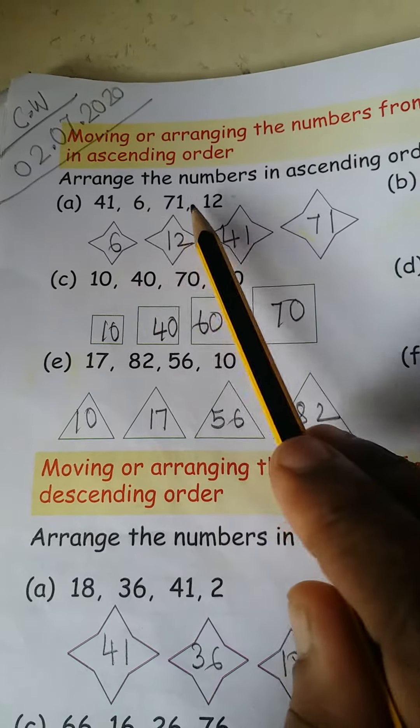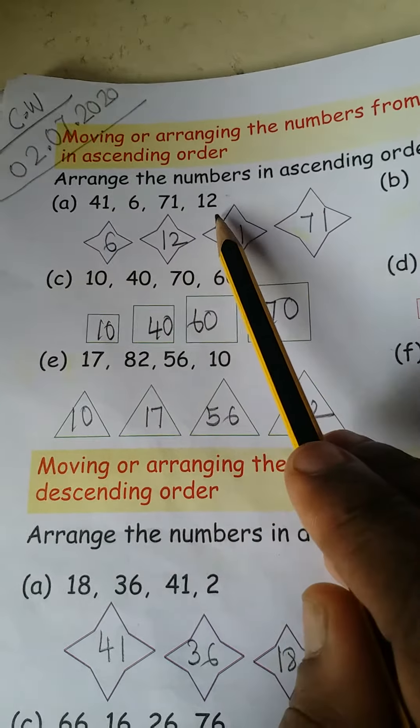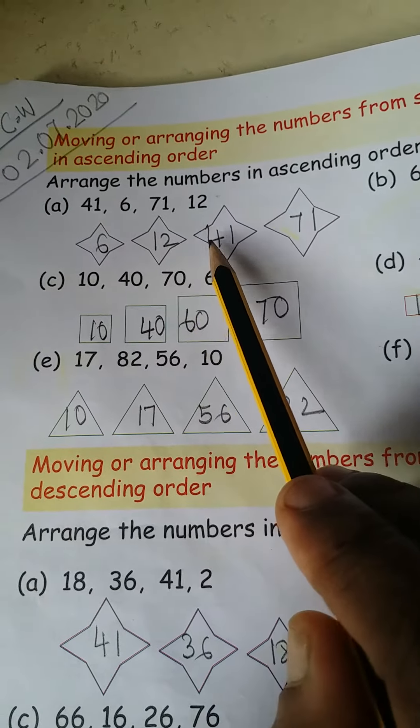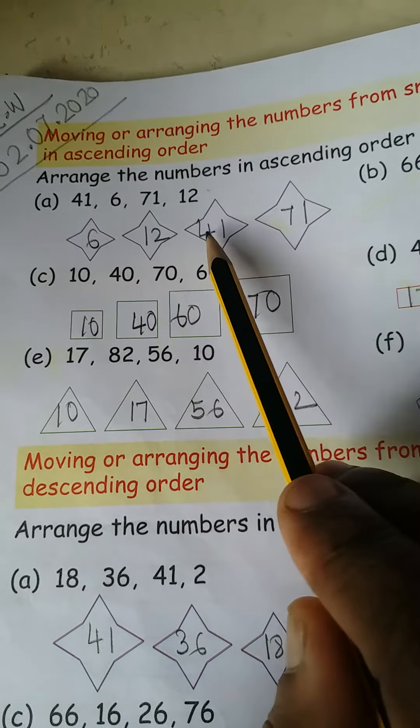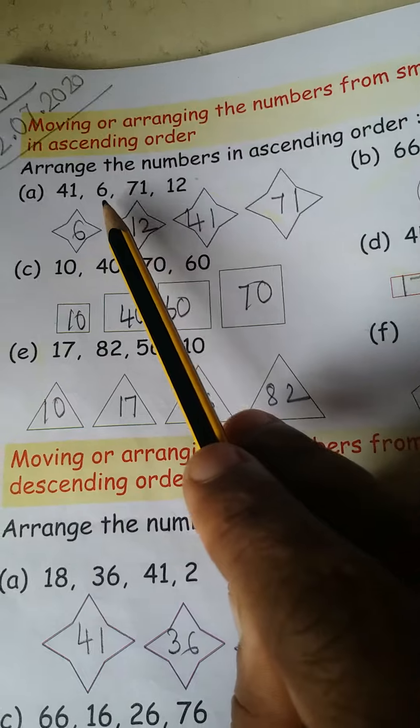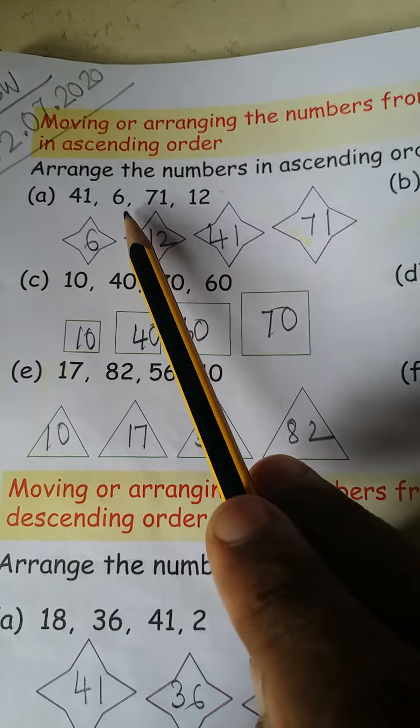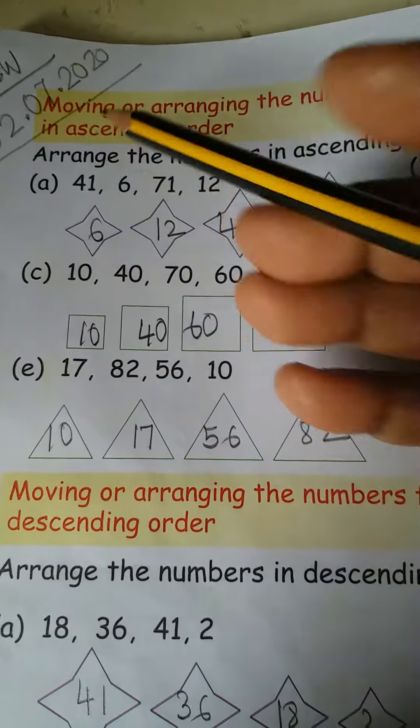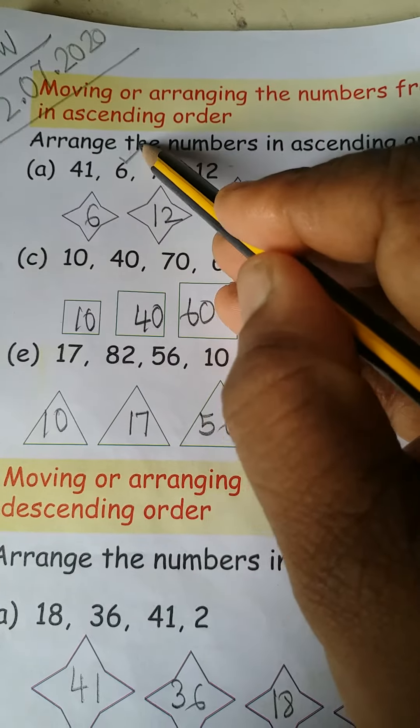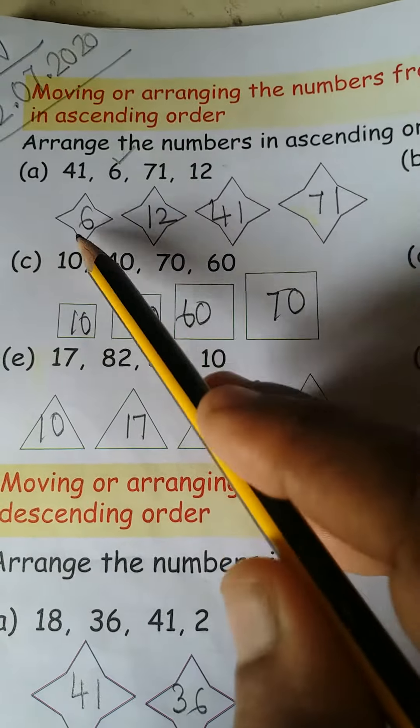Means how many numbers are there? Four. One, two, three, four. We have to arrange these numbers small to big. Now which number is smallest number? Can you say? Yes, 6 is the smallest number. So please tick this 6 first and write here 6.